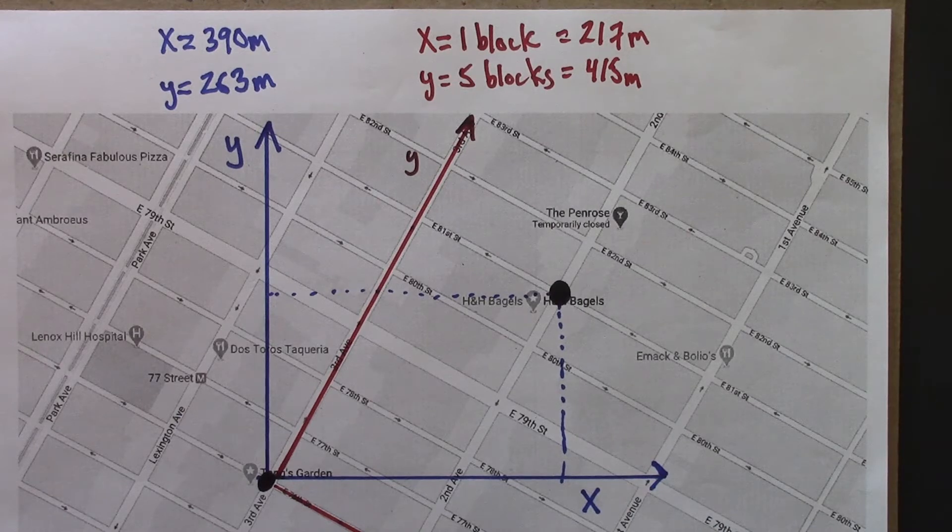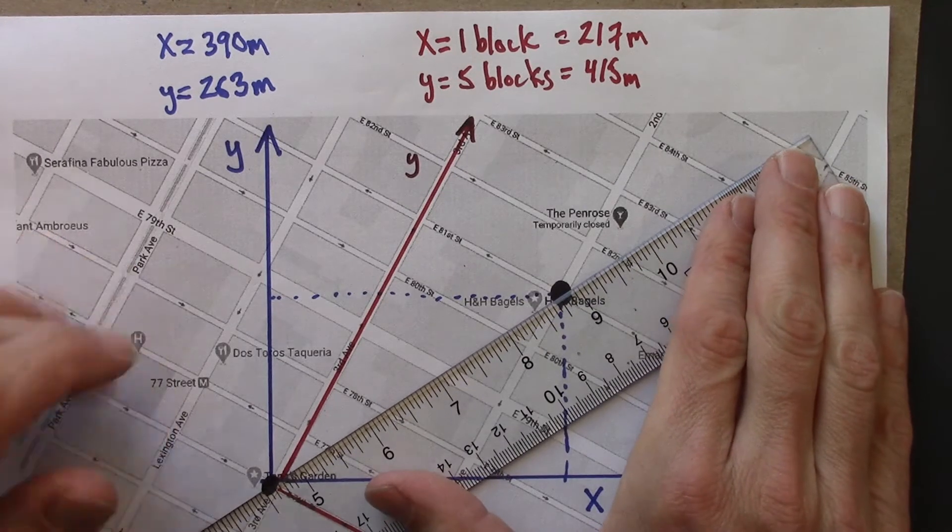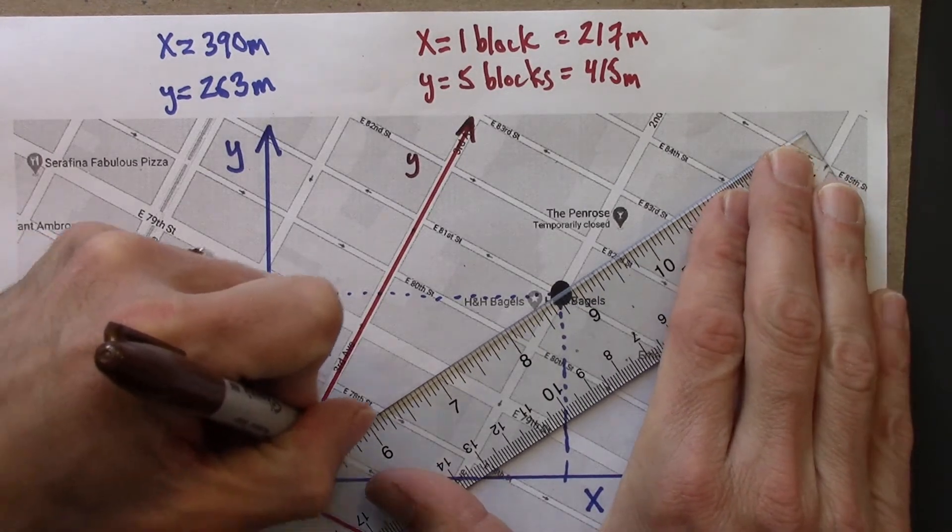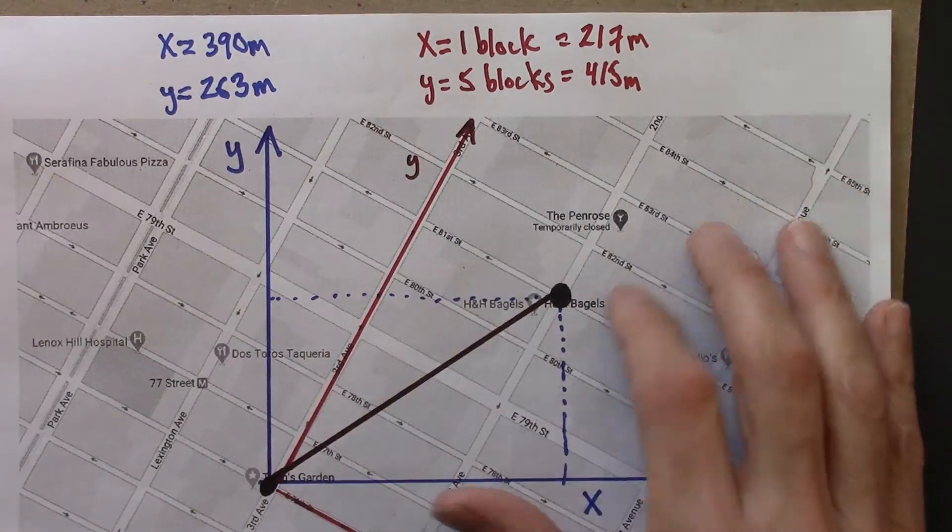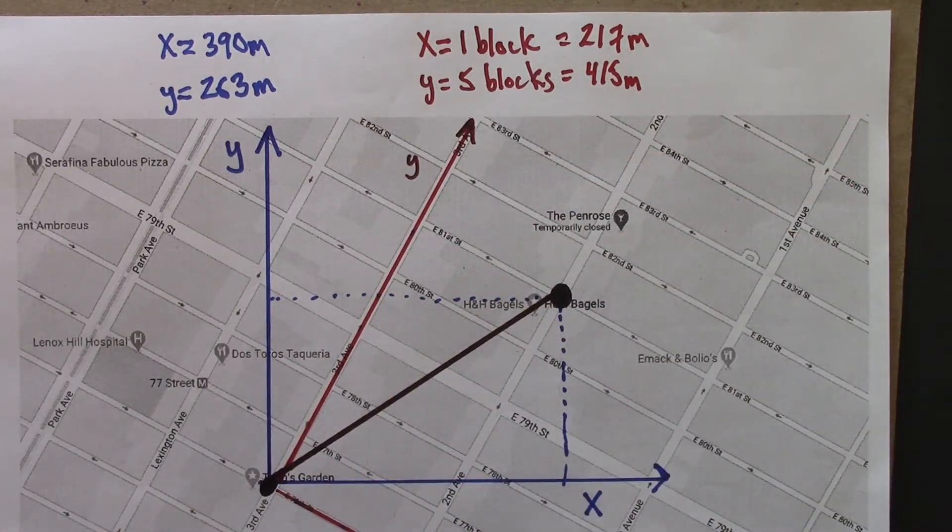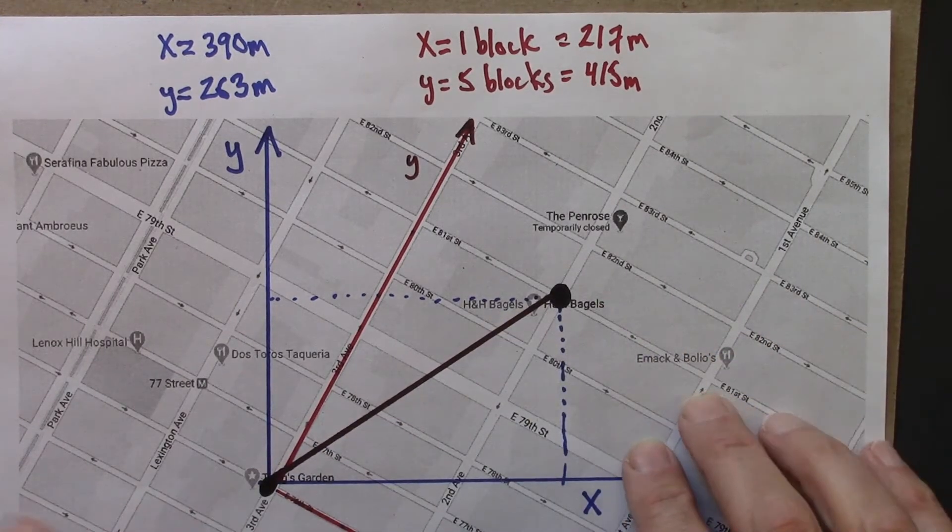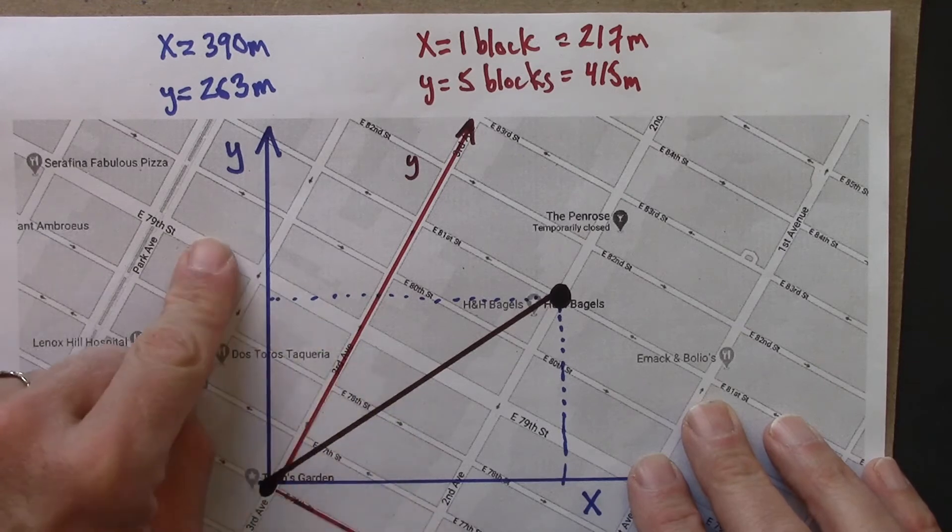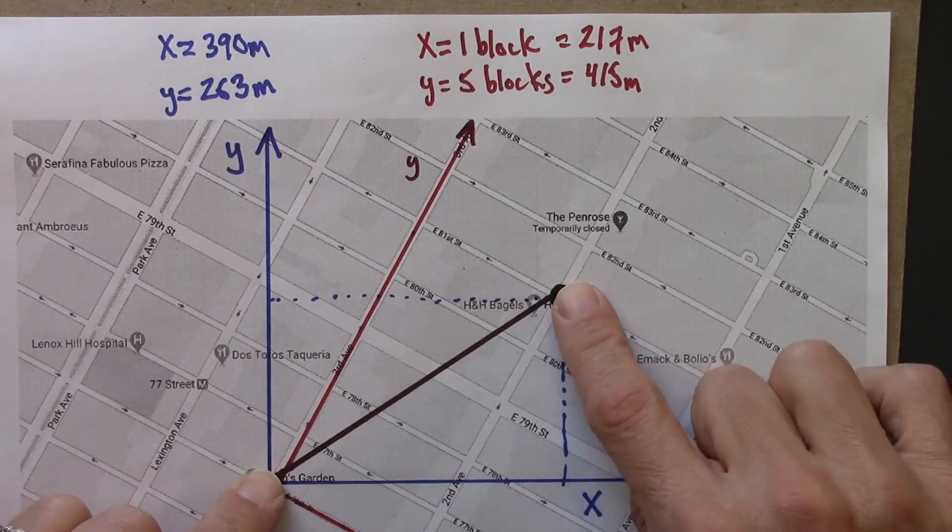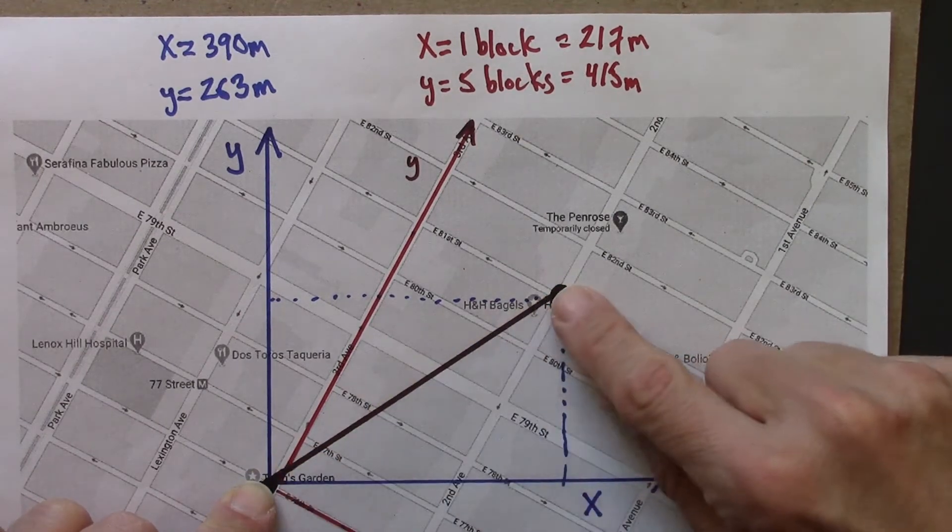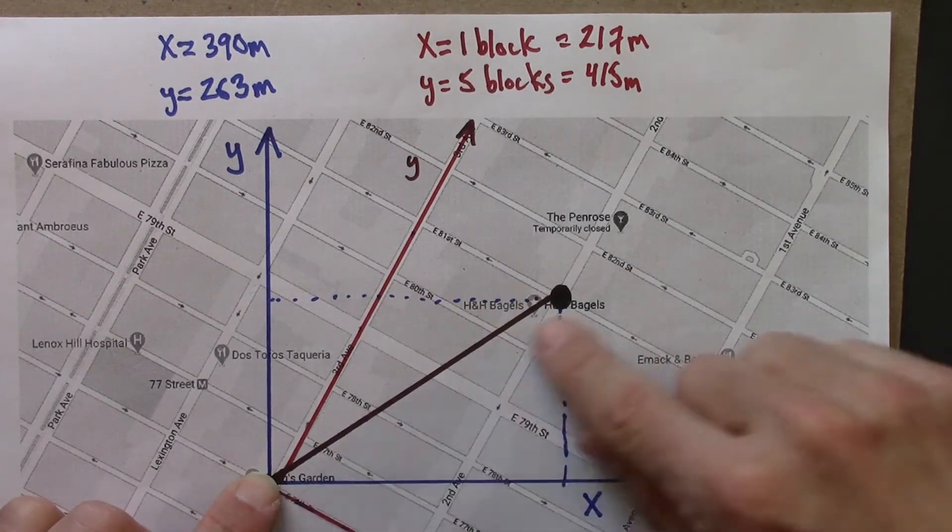This distance, this line that I just drew in brown. That's a piece of physical reality, how far it is from here to here, that's independent of the coordinates, the axes we choose. Moreover, we know a formula for this. It's just given by the Pythagorean theorem, which in this context we can think of as defining distance.